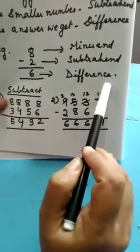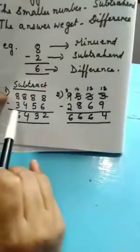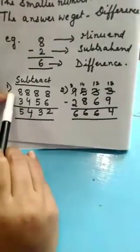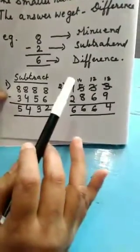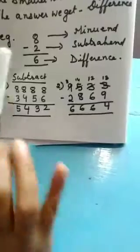Now, let us solve few sums. This sum is simple subtraction, means no borrowing. Okay, simple subtraction.